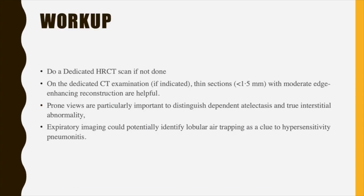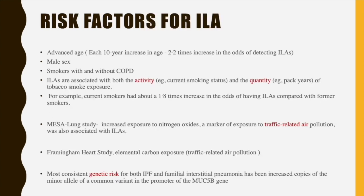The paper includes panels summarizing the workup of patients with ILA. If an ILA was an incidental finding — for example, on an abdominal CT showing the lower lobes, or a scan done for suspected pneumonia — and a dedicated HRCT has not yet been done, it is recommended that an HRCT with thin sections less than 1.5 mm be performed. If dependent atelectasis is suspected, a prone view is recommended, and an expiratory view is useful if hypersensitivity pneumonitis is suspected.